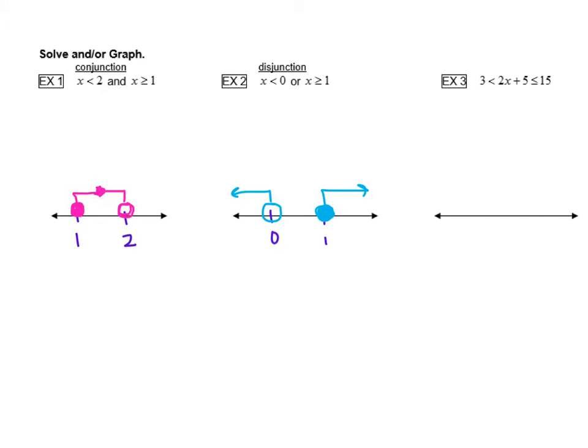So if you notice, an and inequality shades in between your two circles. An or inequality shades out. And one way to remember that the ors shade out, it's like the ors on a boat, you know, a row boat that you're going to row. So ors always shade out.